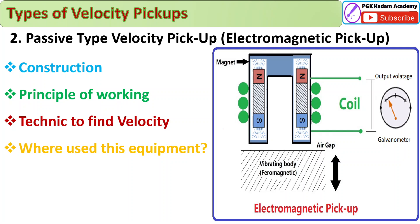Now we will see the next type: passive type velocity pickup, also called electromagnetic pickup. Its construction is very simple — there is a magnet and coils, and the coil output goes to a galvanometer. The vibrating body does not directly contact the electromagnetic pickup; a small gap is maintained between them.